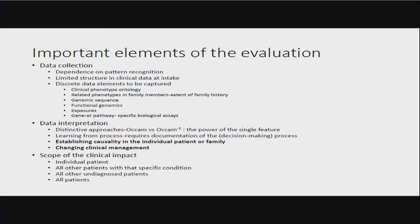On data interpretation, there are some very distinctive approaches we use in different parts of medicine that are traditionally Occam's razor — refining to look for the single most likely explanation. Yet when we're looking at many of these cases, we're grasping for a single feature that might give us an inference about which among a range of candidate genes might be important. We need to learn from process and begin to document more precisely each of the nodes in that decision-making process.